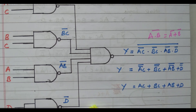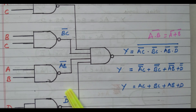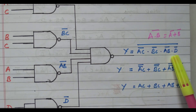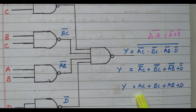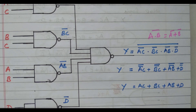So here we used five NAND gates. In this video we discussed how to implement the Boolean function using only NAND logic. First the given function was simplified, then it was implemented with AND and OR gates, then implemented with only NAND gates. The output was verified using De Morgan's theorem to confirm we got the required output. Thank you for listening.